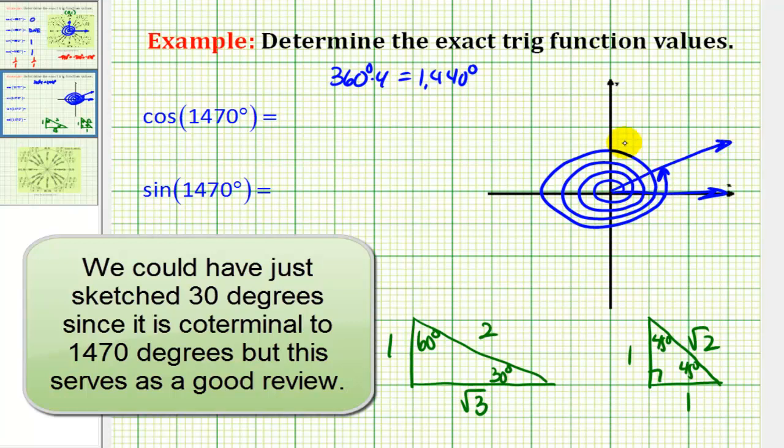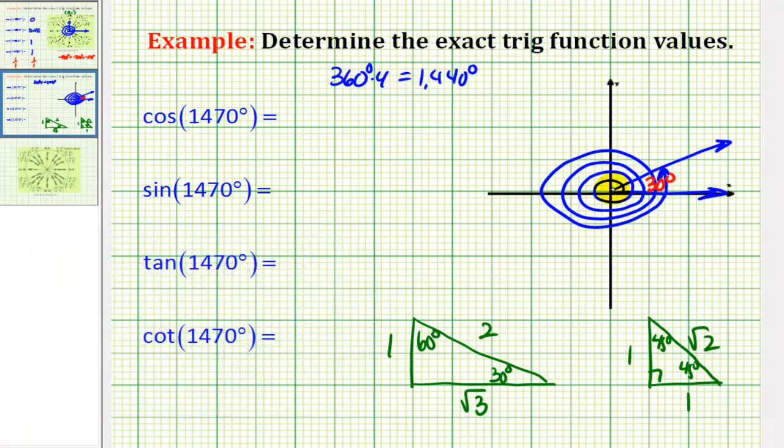Meaning our reference angle right here would be 30 degrees. So our reference triangle would be this triangle here. And since we're in the first quadrant, both legs will be positive. So this would be 1, this would be 2, and this would be square root of 3.